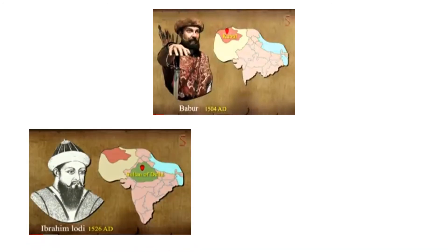In the Battle of Panipat in 1526, Babur marched from Kabul for the conquest of India. He crossed into Punjab and conquered it. Meanwhile, Ibrahim Lodi, overconfident about his larger army, did not do much to resist Babur's progress — he moved leisurely to counter Babur.